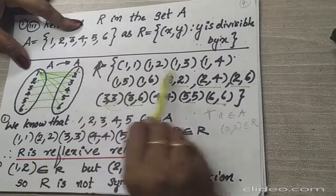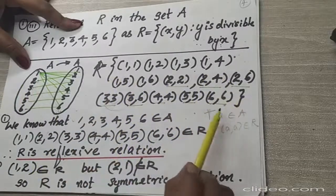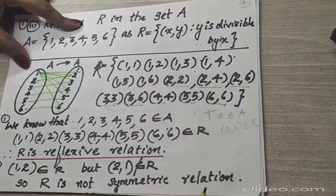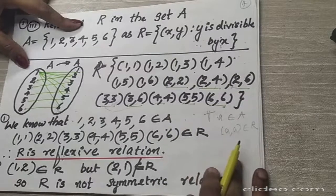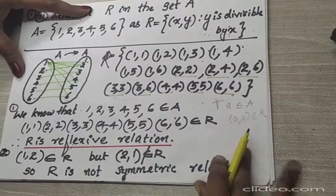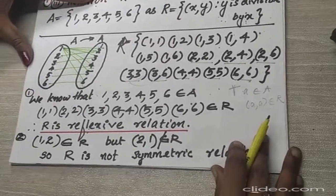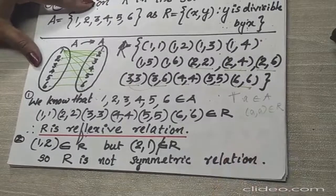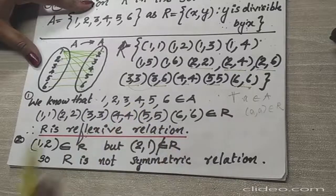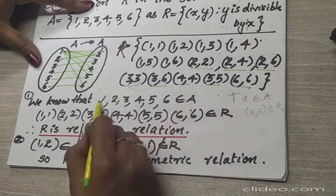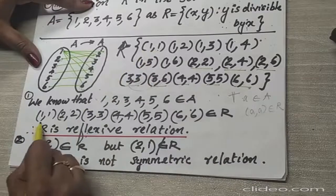Now we will check whether this relation is reflexive, symmetric, and transitive or not. To check reflexive, first you need to see the elements which belong to set A: {1, 2, 3, 4, 5, 6}. If 1 belongs to A, then (1,1) should be in the relation — yes, it is there.